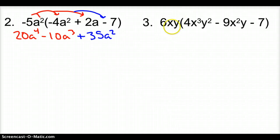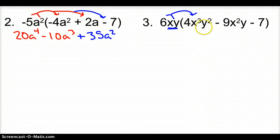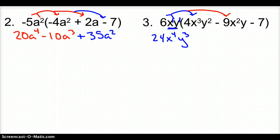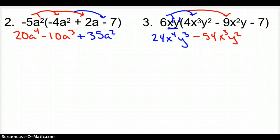Next, with number 3, now we have an x and a y, so we have to be careful because we have to multiply both of those exponents. 6xy times 4x cubed y squared: number times number is 24; x times x cubed — adding those exponents, there's an exponent of 1 here — gives x to the 4th; and y times y squared is y cubed. Now taking that times the next term gives negative 54: x times x squared is x cubed, y times y squared is y squared. And finally, times 7 gives negative 42, then x, y.